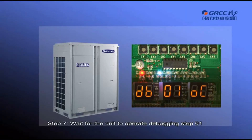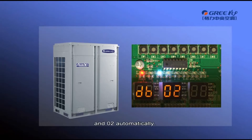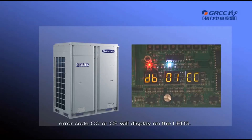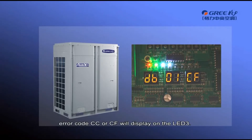Step 7. Wait for the unit to operate debugging steps 1 and 2 automatically. If the master module is incorrect, error code CC or CF will display on LED3.